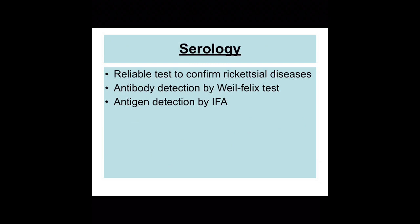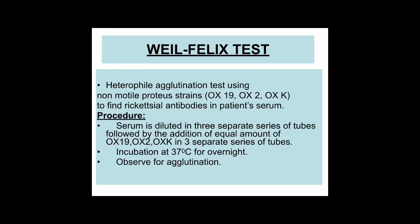Serology is a very reliable test to confirm rickettsial diseases. Two methods are used: antibody detection by the Weil-Felix test, and antigen detection by immunofluorescent assay. The Weil-Felix reaction test is a heterophile agglutination test in which the patient's serum is tested for agglutinins to antigens of certain non-motile Proteus and rickettsial strains, which are OX19, OX2, and OXK. The procedure involves diluting serum in three separate series of tubes, followed by the addition of equal amounts of OX19, OX2, and OXK in separate series of tubes, then incubating at 37 degrees overnight and observing for agglutination.